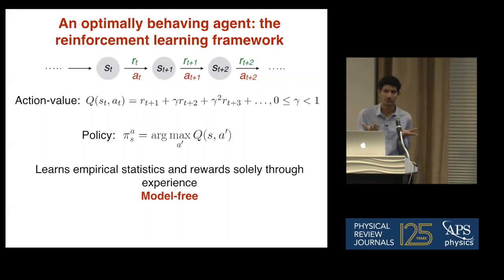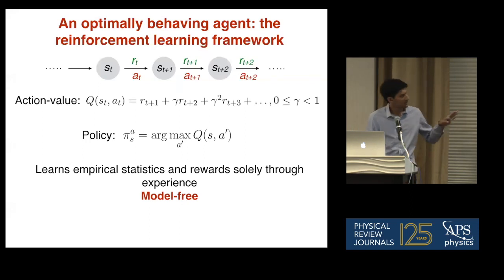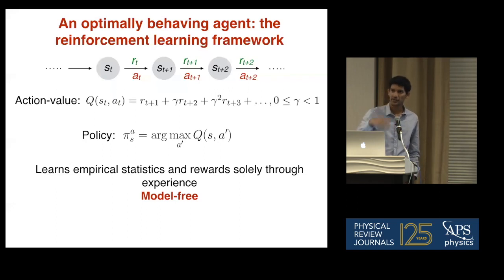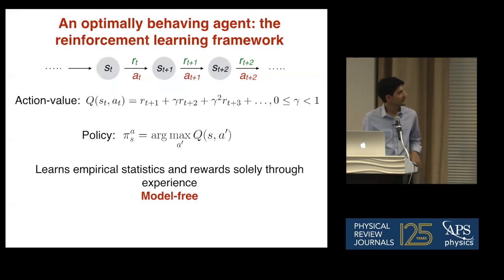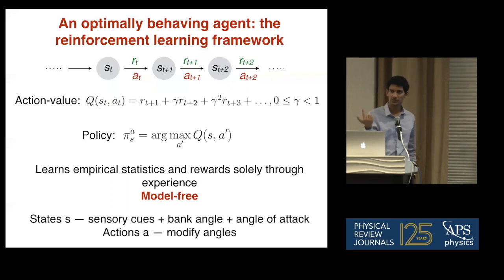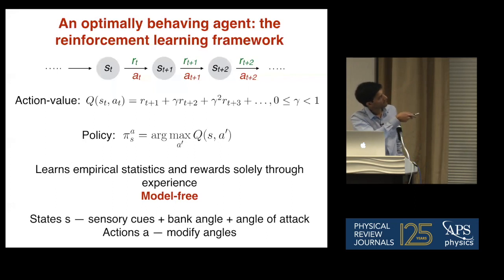One thing different from supervised learning is that the samples you collect depend on the policy you use — you're not given a batch of samples, you have to look for good ones, so there's an exploration-exploitation trade-off implicit in RL algorithms. The states are the sensory information the glider or bird is receiving plus the control angles, the actions are how you modify those angles, and the goal is to gain as much height as possible. Before training you see random trajectories — it takes random actions and sinks on average. After learning, it begins to find thermals and you see spiraling behavior that birds do as well.